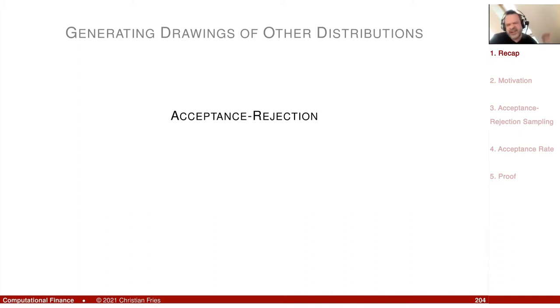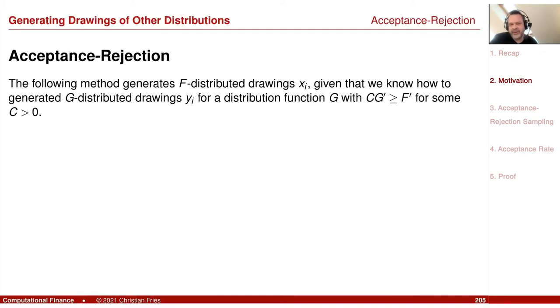That is actually solved because we have good approximations, but now comes a method which is very interesting — which doesn't require that we can invert the distribution function.